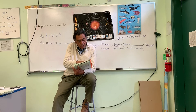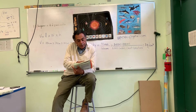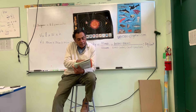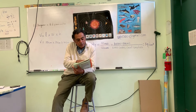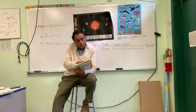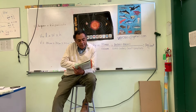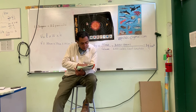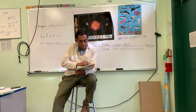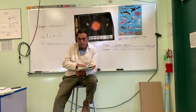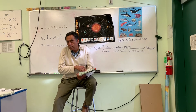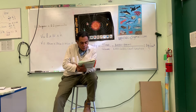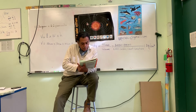And number seven: name the sharp-pointed organ that the female of some insect species uses to dig into the ground to lay eggs. It is called the ovipositor. You can see that especially on the grasshopper — you can see the points there at the end of the abdomen.